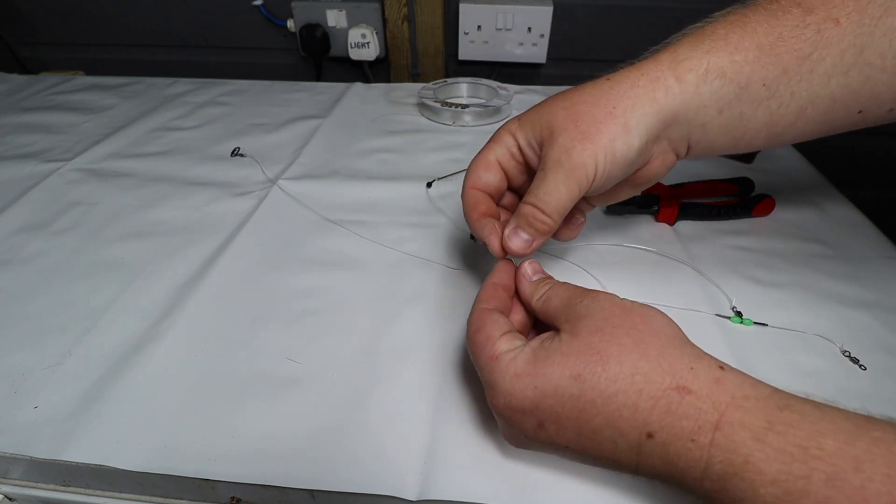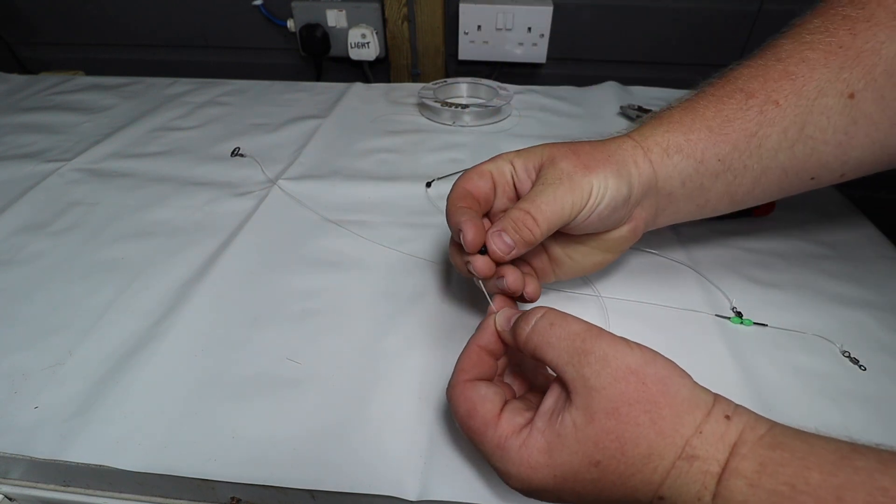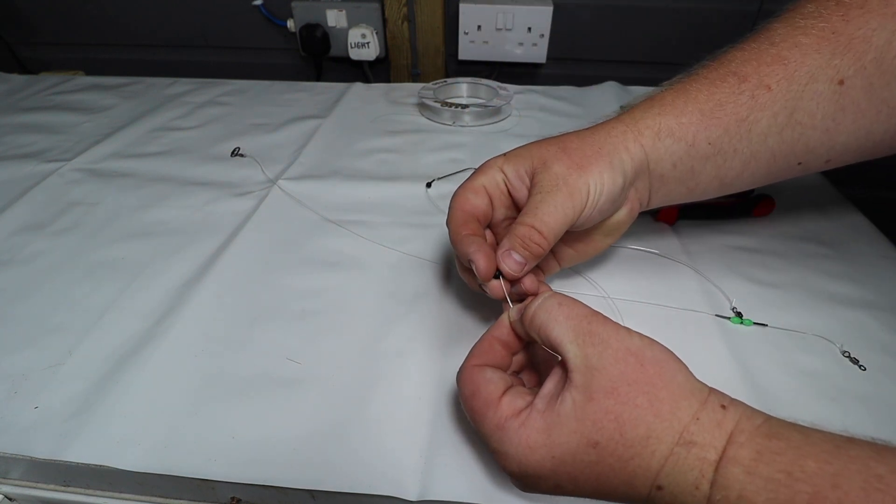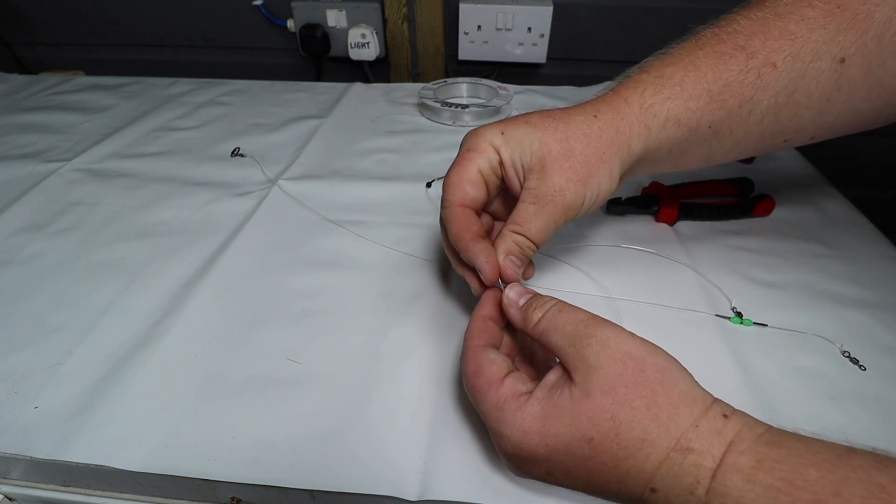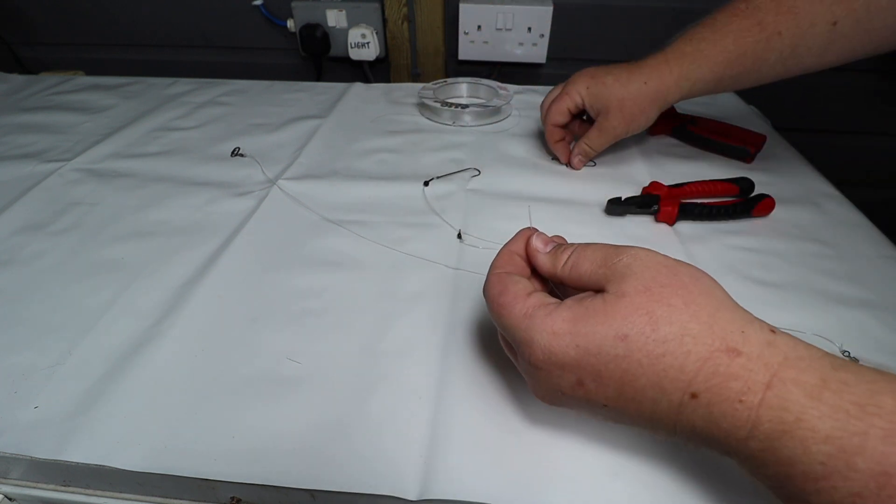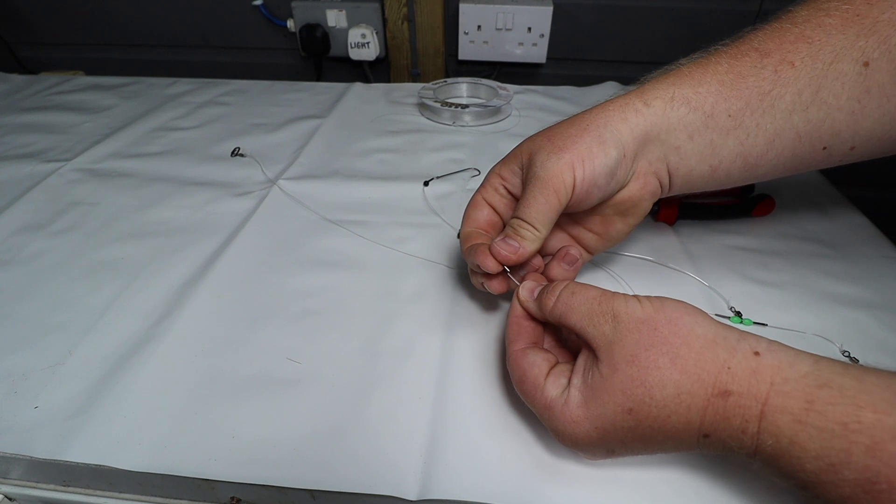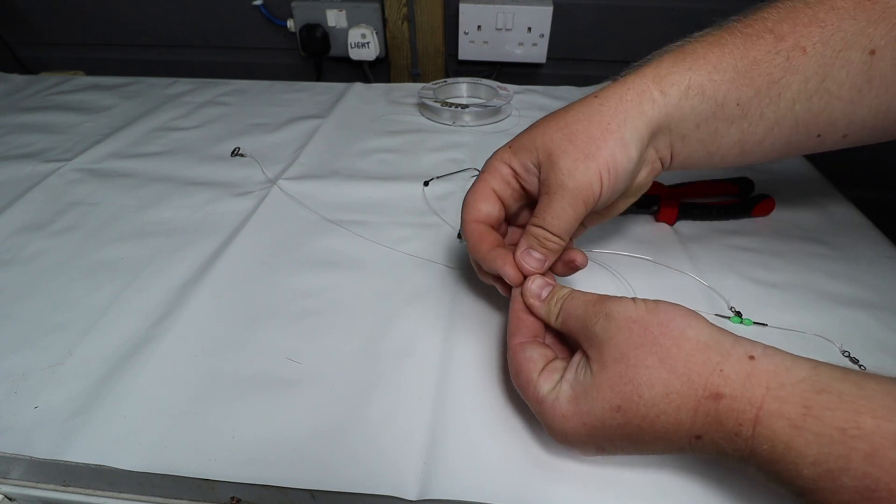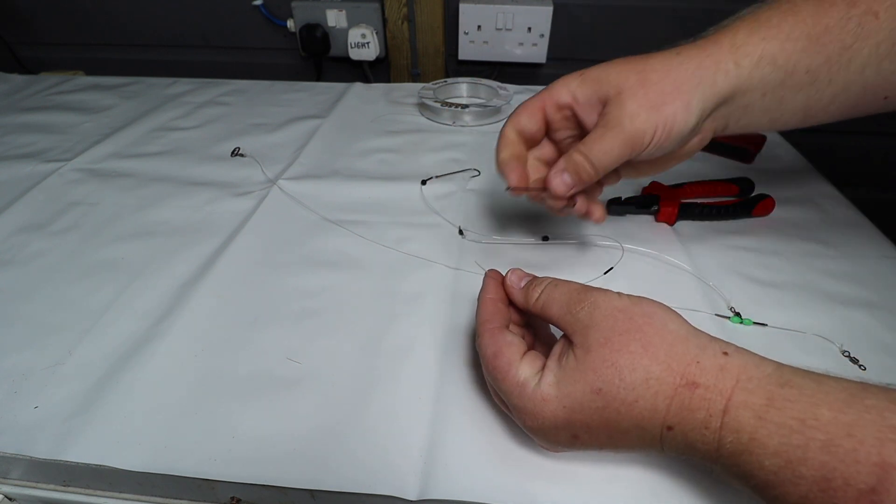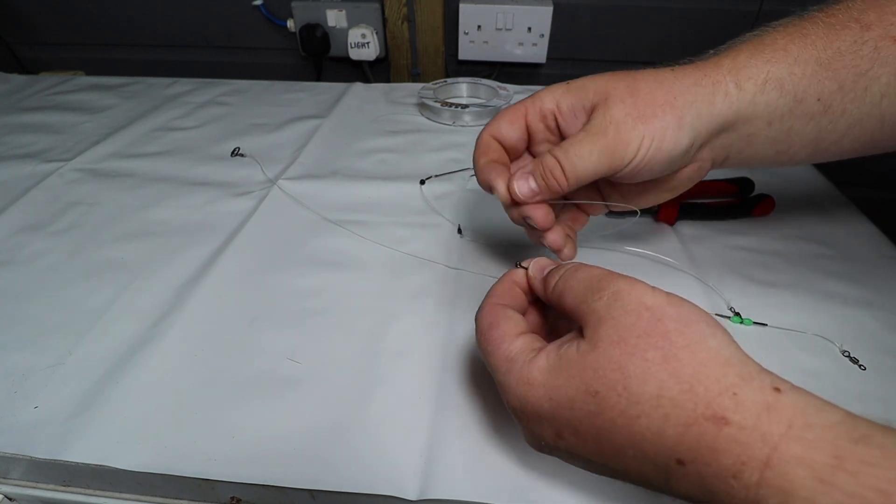Now it's time to feed it through the end of the swivel just like so, and feed the other black bead on, and the crimp, and now tie on the other end another hook.